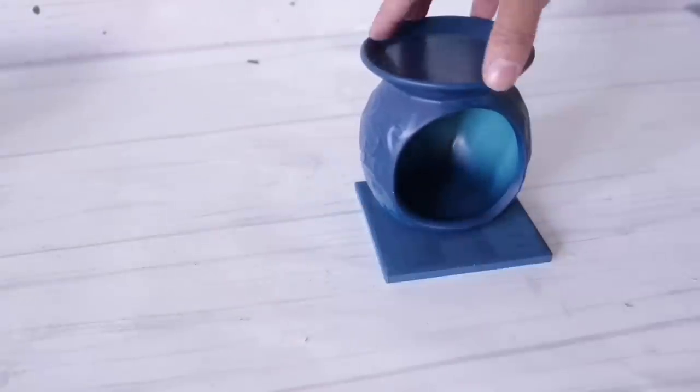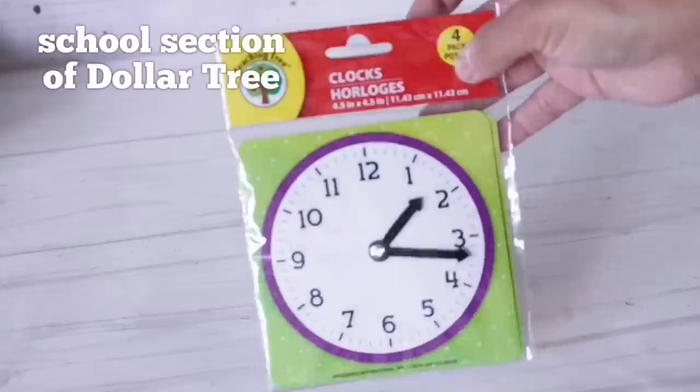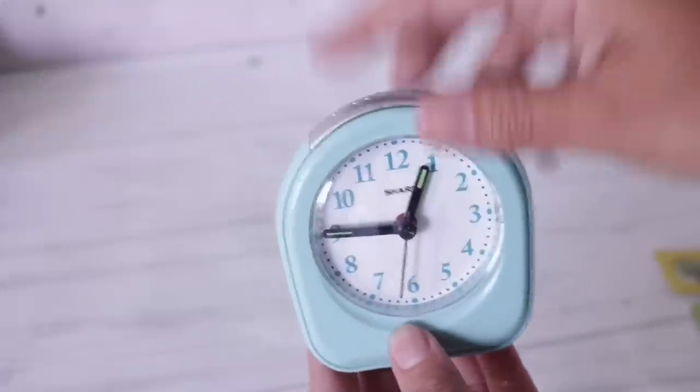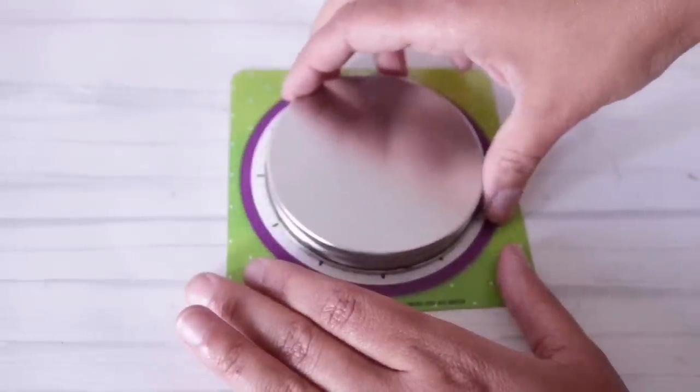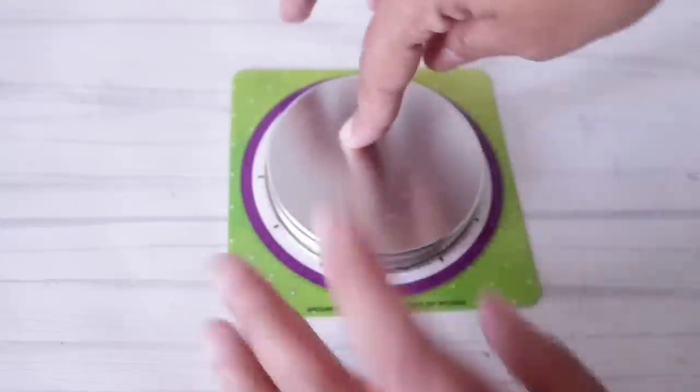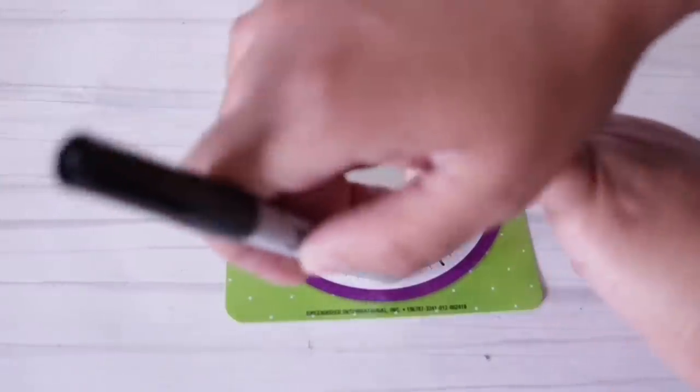I used these clocks in the first video but you can always use something like this. I found this for three dollars at Walmart. I'm keeping it simple so I'm just going to take a jar lid and trace the clock just so I can have it fit and then I'm going to cut it down.